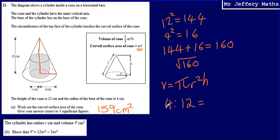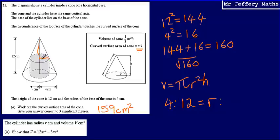Then what we can say is, if the ratio is 4 to 12 of the radius to the height, we can do exactly the same thing with the height of the smaller cone on top to the radius of that cone. The radius of the cone is the same as the radius of the cylinder, which is r. So radius to height of the larger cone is r to 12 minus h, where h is the height of our cylinder.